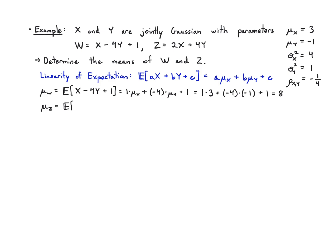For μz, that's going to be the mean of 2X plus 4Y: 2 times μx plus 4 times μy, which is 2 times 3 plus 4 times minus 1, and that's 2.